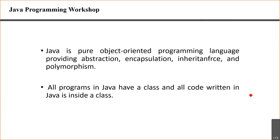Java removes the complexities of C++. Java is a pure object-oriented programming language — the basic program in Java is a class program, and without a class there is no program. In C you can only do structured programming, in C++ you can do both structured and object-oriented, but in Java it's only object-oriented.